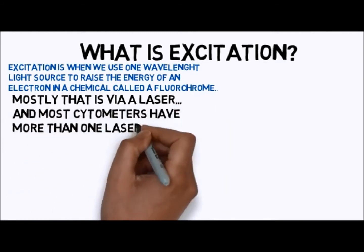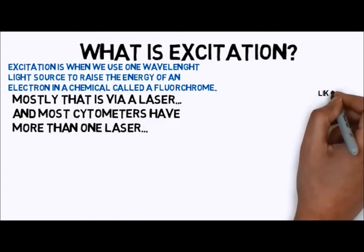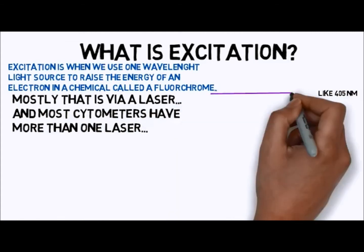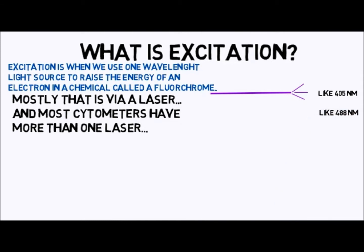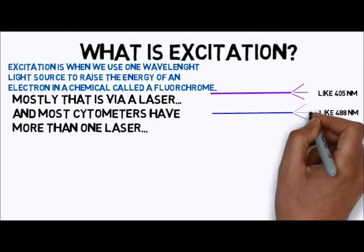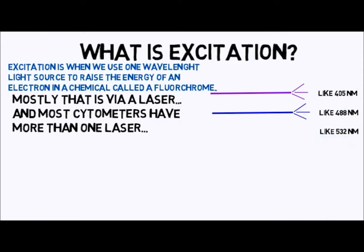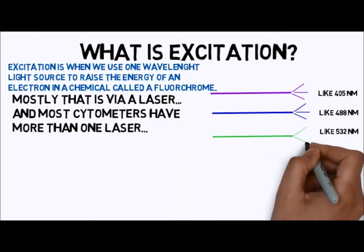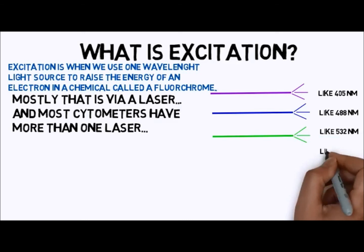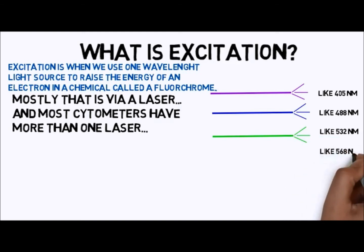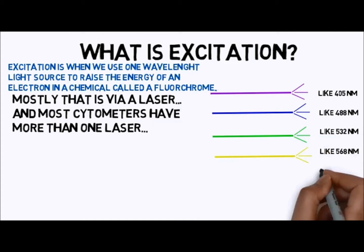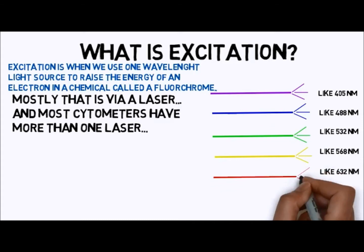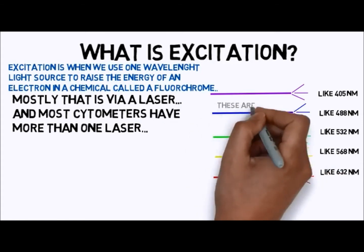Some flow cytometers have only one light source, but most have several. Here are the common lasers: first, the 405 nanometer violet line — not quite UV, but many people call it UV regardless. Then probably the most common, the 488 nanometer line from an argon laser. The 532 nanometer green line, the 568 nanometer yellow line, often coming from krypton lasers. And finally, a red line, often about 632 nanometers, but can be 660 nanometers or even higher.